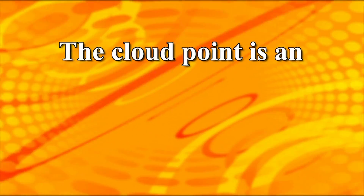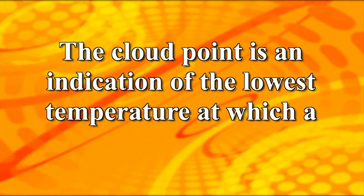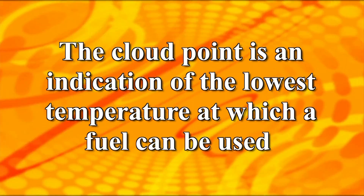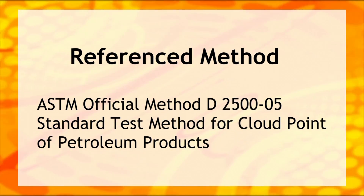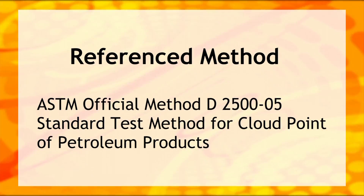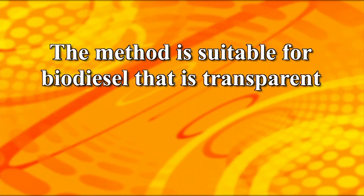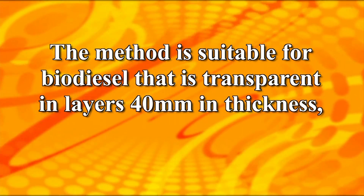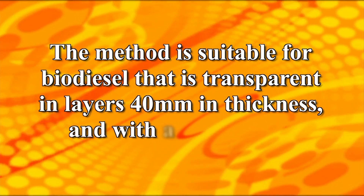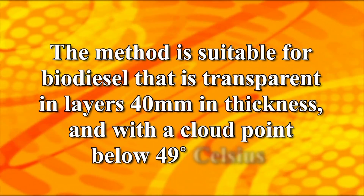The Cloud Point is an indication of the lowest temperature at which a fuel can be used. The Cloud Point method described here is based on this official method. The method is suitable for biodiesel that is transparent in layers 40 millimeters in thickness and with a Cloud Point below 49 degrees Celsius.